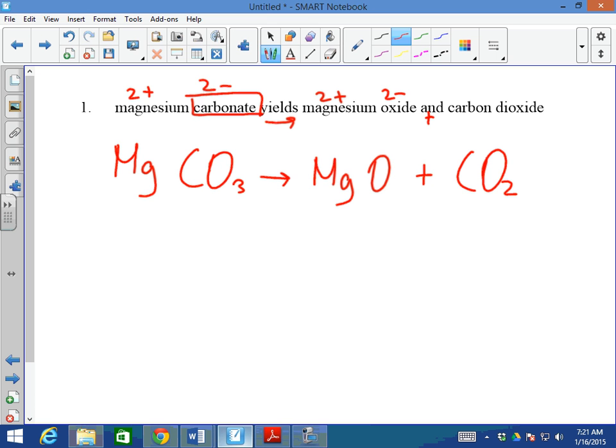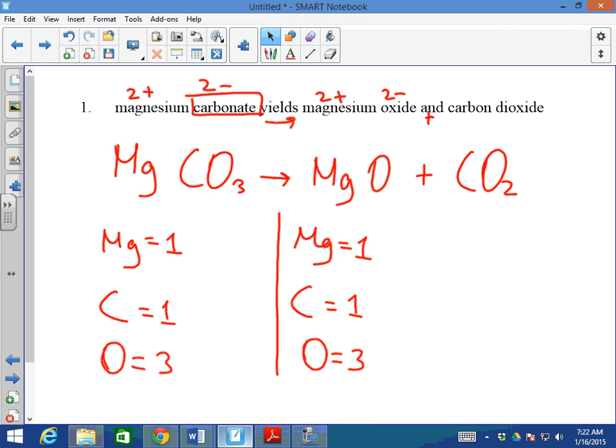Let's do a count. Magnesium here, magnesium there, and I have one of each. Carbons on this side, I have 1. Carbons on this side, I have 1. On this side before the arrow, I have 3 oxygens, and after the arrow I also have 3. I have 2 here and 1 there. If I take a closer look at the equation, I consider everything is balanced.